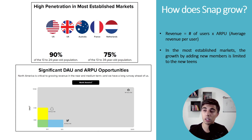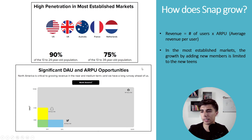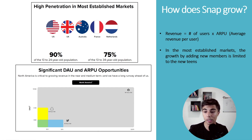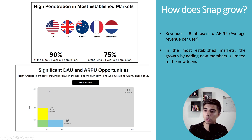In these most valuable markets, growing by expanding the number of users is unlikely, which means the second part of the equation — average revenue per user — becomes very important. Snap, after 10 years, has 97 million users in North America with an average revenue per user of $31. Twitter at 16 years has fewer users but a much higher ARPU. And Facebook is just huge both in number of users and average revenue per user — the revenue they bring is just crazy.